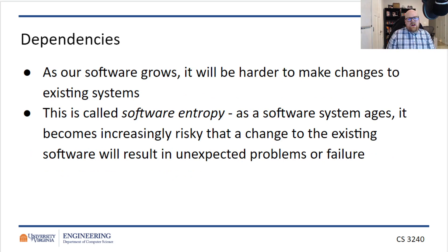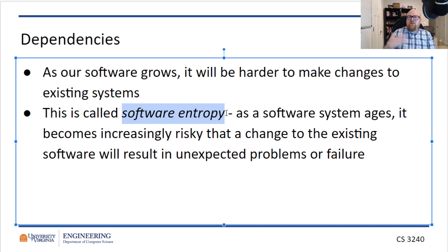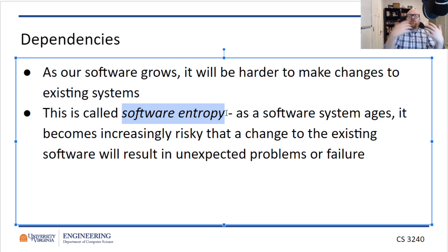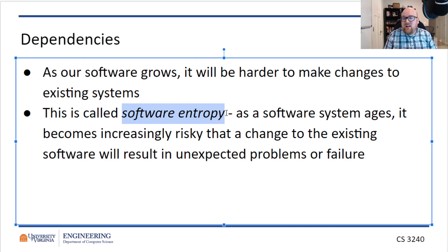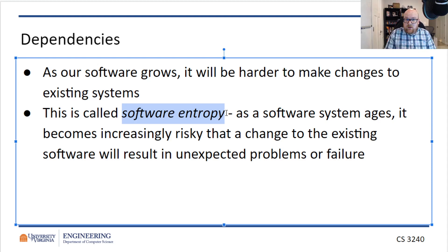As software grows, it will be harder to make changes to the existing system. This is called software entropy. As a software system ages — and by ages, we don't just mean time, we specifically mean as you make changes to the system, add classes, change functions, fix bugs — any changes to the system over time become increasingly risky to propagate, causing you to have to change large portions of the system. Having to change other parts of the system to accommodate one change is bad. But if we select the correct architecture and the correct design, we can limit that.